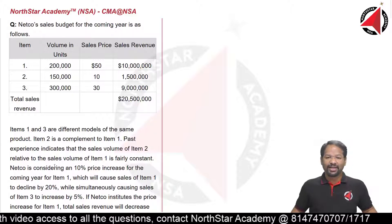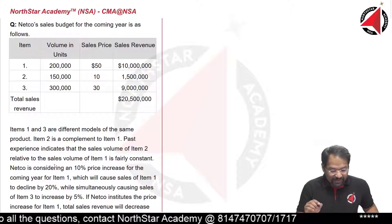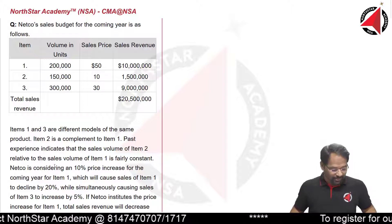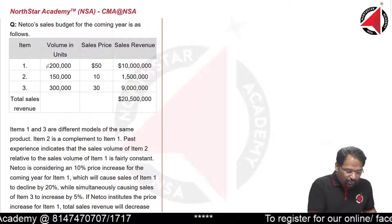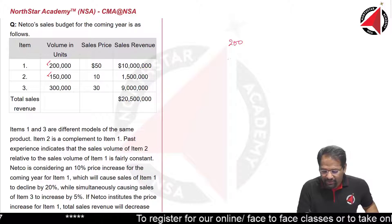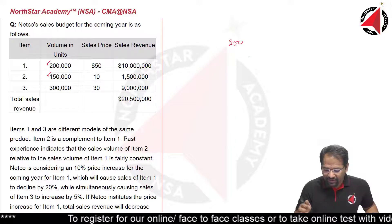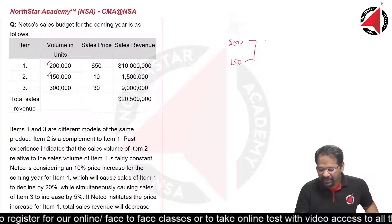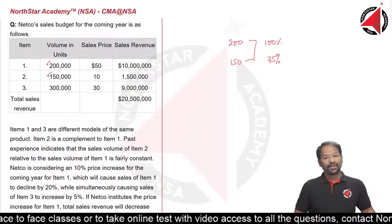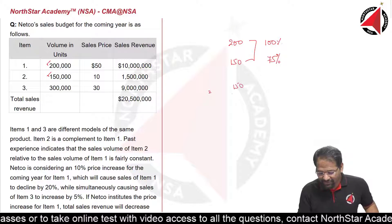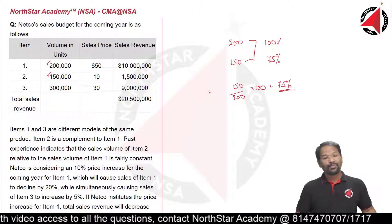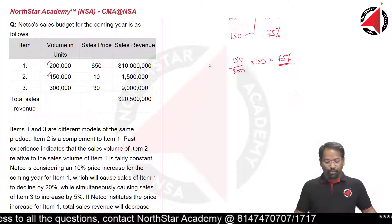The question says the relationship between Item 1 and Item 2 remains constant, so first we need to find that relationship. Item 1 is 200,000 units whereas Item 2 is 150,000 units. So Item 2 is 150,000 divided by 200,000 multiplied by 100, which equals 75%. This relationship is important because we will use it for further calculations.